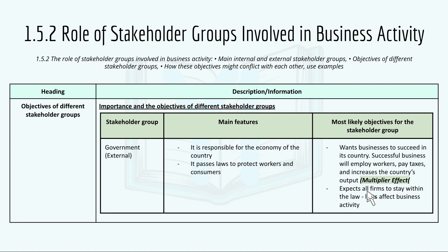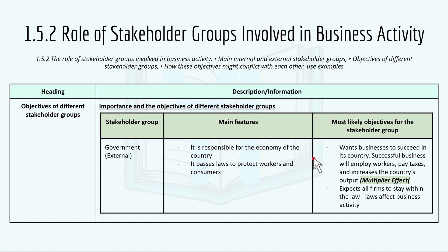Government is an external stakeholder group. They are responsible for the economy of the country and pass laws to protect workers — called labor laws — and consumers. Their most likely objectives: they want businesses to succeed as successful businesses will employ workers, pay tax, and increase the country's output, which creates a multiplier effect and increases tax revenue. The other objective is that the government expects all firms to stay within the laws, as laws affect business activity.